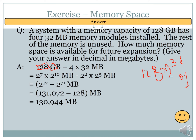To write 128 gigabytes in terms of megabytes, we divide by 2 to the power 20, leaving us with 128 × 2¹⁰ megabytes. That is the first conversion. So 128 × 2¹⁰ megabytes is the total capacity.